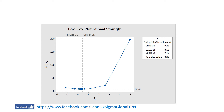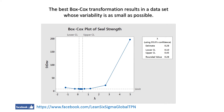Let's use the Box-Cox transformation to try to transform the non-normal shield strength data. The goal is to find a lambda that transforms our non-normal data to normally distributed data. The best transformation will result in a dataset whose variability is as small as possible. This graph plots the standard deviation as a function of Y versus lambda, and the 95% confidence interval provides a likely range of values for lambda.